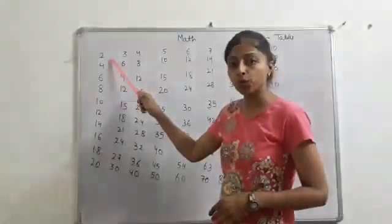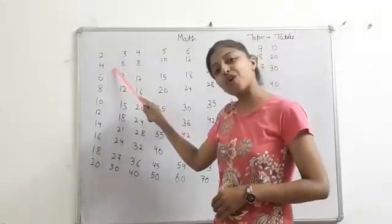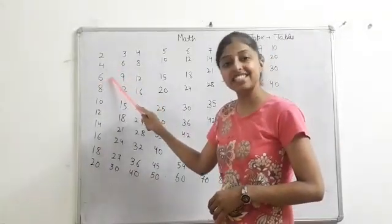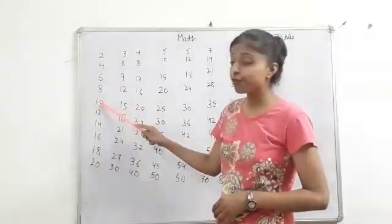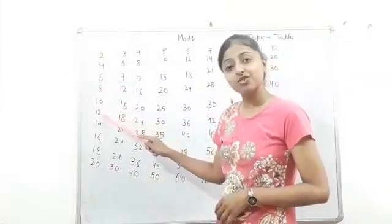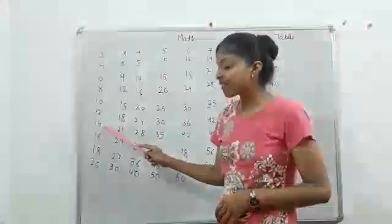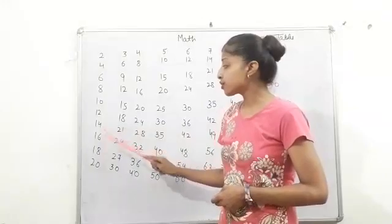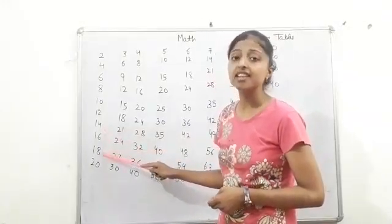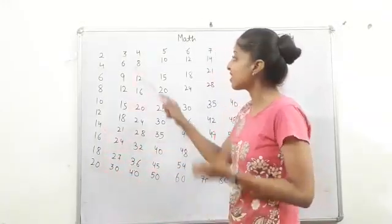2 ones are 2, 2 twos are 4, 2 threes are 6, 2 fours are 8, 2 fives are 10, 2 sixes are 12, 2 sevens are 14, 2 eights are 16, 2 nines are 18, 2 tens are 20.